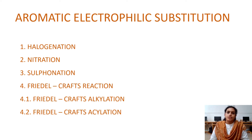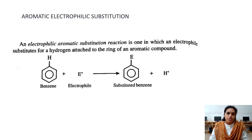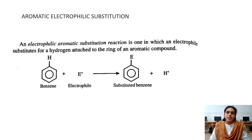Hello all, today we are dealing with aromatic electrophilic substitutions. It is a reaction in which an electrophile substitutes for a hydrogen attached to the benzene ring. Normally it could be any aromatic ring, but we will be explaining this by taking benzene as the example.